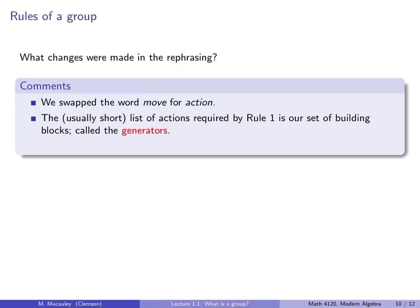The usually short list of actions required by rule one is our set of building blocks, and we call them the generators. So, to solve a Rubik's Cube, or not to solve a Rubik's Cube, to play with a Rubik's Cube, you really only need six actions. There are six faces of a Rubik's Cube, and you can generate any complicated sequence of twists by twisting one of the six faces by 90 degrees. So, we call those the generators, and those generate the usually much more numerous set of actions.